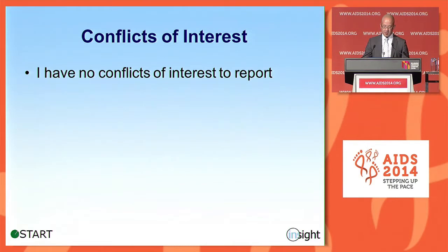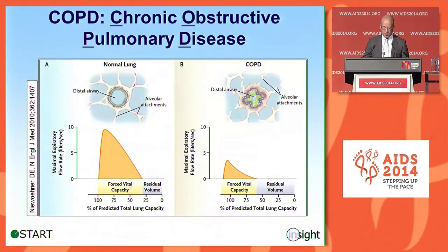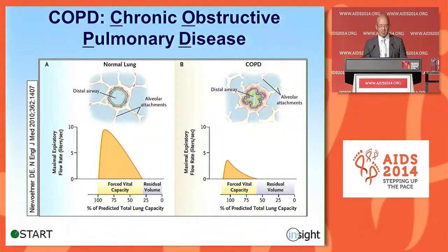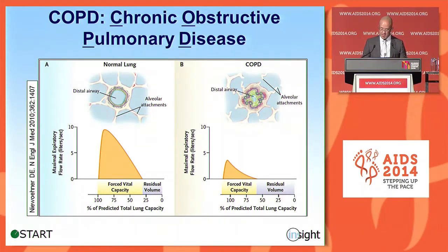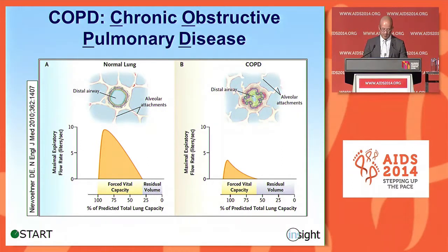I have no conflicts of interest to report. I thought I'd start this talk by just reviewing COPD a little bit. COPD stands for chronic obstructive pulmonary disease. This is a lung disorder that's characterized by several things. One, as seen in this cartoon, is emphysema, which is disruption of the alveolar attachments. There's also airway inflammation and airway fibrosis.